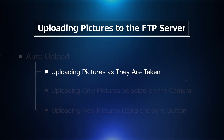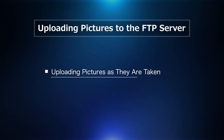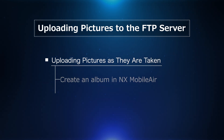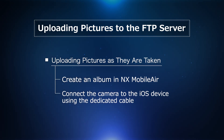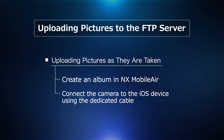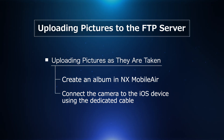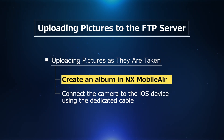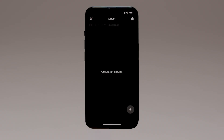First, let's look at how NX Mobile Air can be configured to upload pictures as they are taken. There are two steps. The first is to create an album to store pictures imported from the camera. To create an album, tap the Plus button at the lower right in the album list.